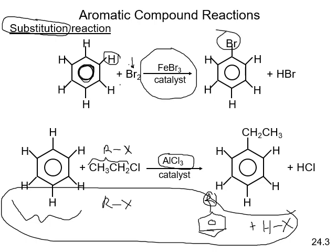You might think: can I do this with chlorine? Yes — chlorine can be used as a reactant, but now the catalyst is FeCl3, and you get a chlorine placed on the benzene ring.